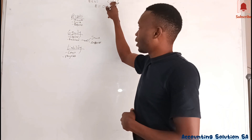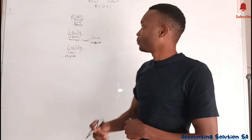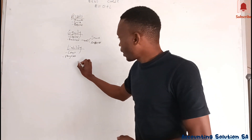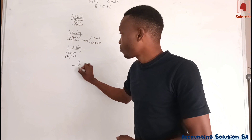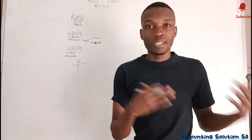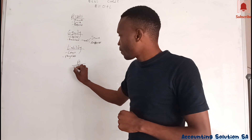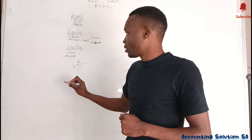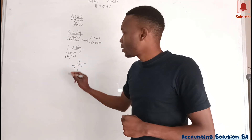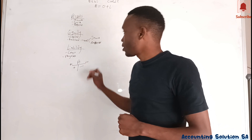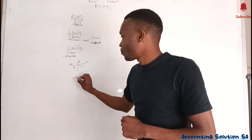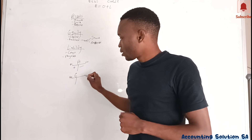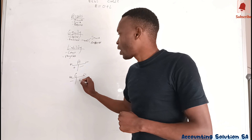Now let's go back to the rule of debit and credit. For assets, the principle is: assets increase on the debit side and decrease on the credit side. For equity, the debit and credit rule is opposite to assets.